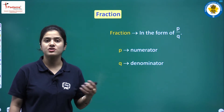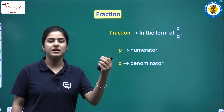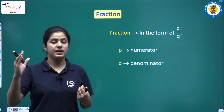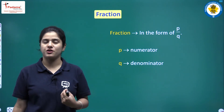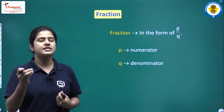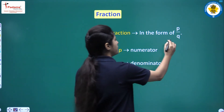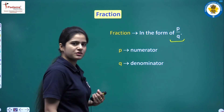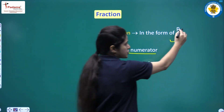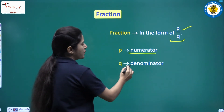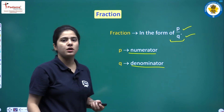What is a fraction? A fraction is something that can be represented in the form of p upon q, where p is in the numerator and q is in the denominator. Anything that can be represented in the form of p upon q is called a fraction. Here p is the numerator, written on the top, and q is the denominator, written at the bottom.